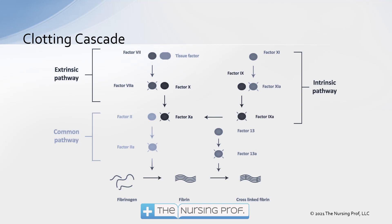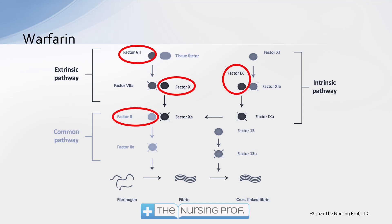We then move into the formation of the actual clot itself. We have fibrinogen, which forms into fibrin, and then cross-linked fibrin — in other words, our clot. Let's take a look at some of these anticoagulants and how they work.